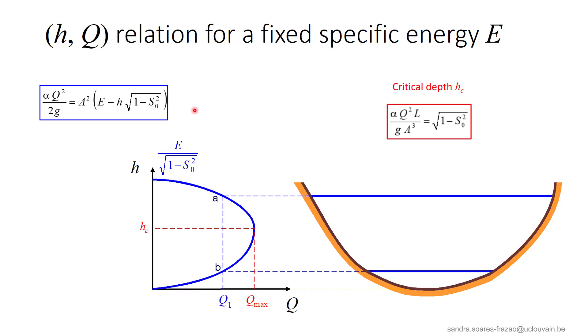The relation highlighted in blue here, issued from the definition of the specific energy, gives the blue curve in the graph. We can see that for a given discharge Q1 lower than Qmax, there are two possible flow depths, one below Hc and one above Hc. We can also conclude that for a fixed level of specific energy, it is impossible to have a discharge larger than Qmax.